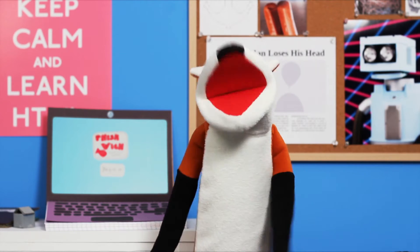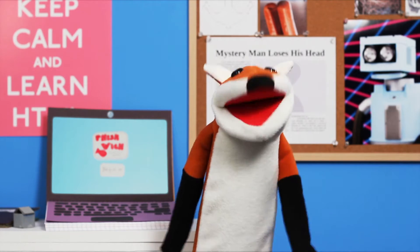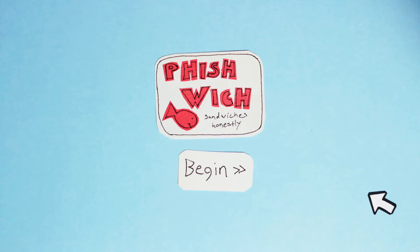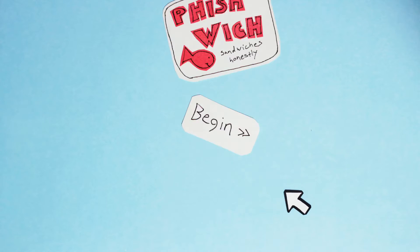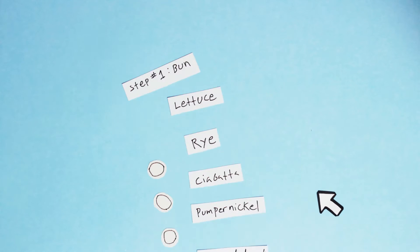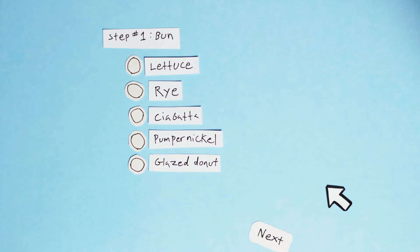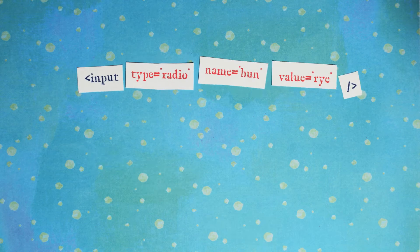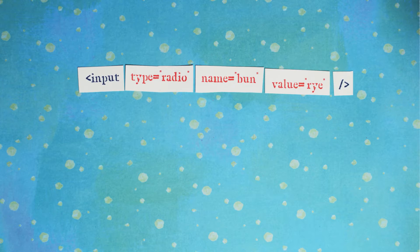I'm going to make an amazing sandwich. Let's see, type of bun. These are radios. Radio buttons are a type of HTML input. They have three important attributes: type, name, and value.